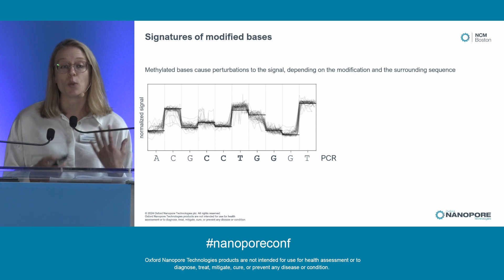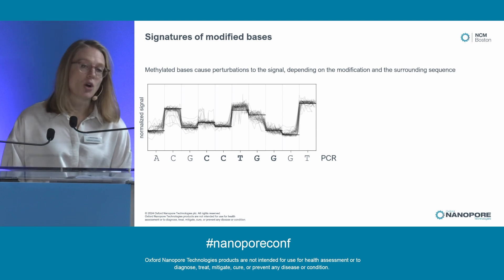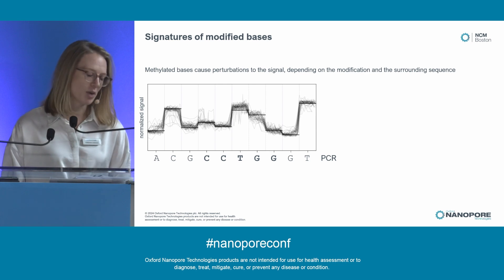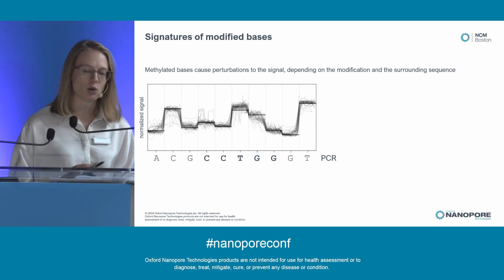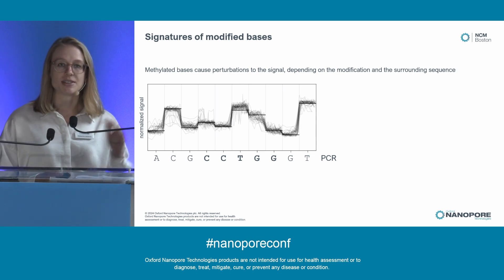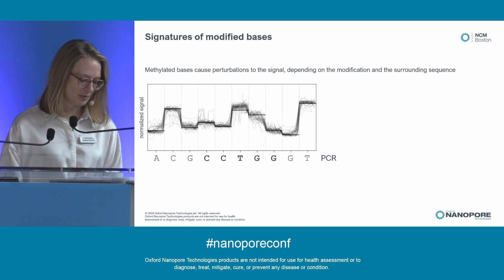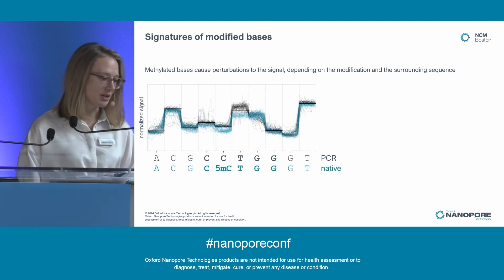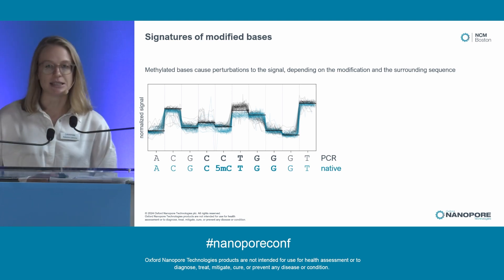Modifications impact the signal in DNA just as they do in RNA. Here I'm showing an overlaid plot of reads from a particular region in a bacterial isolate — in this case from PCR data, unmodified. I've warped these signals in time on the x-axis and normalized them on the y-axis. The thick black lines are a prediction from a simple model for the expected signal level for that canonical base sequence. Now overlaying data from a native sample in blue, we can see perturbations to the signal around the known location of the 5MC in motif CCTGG.